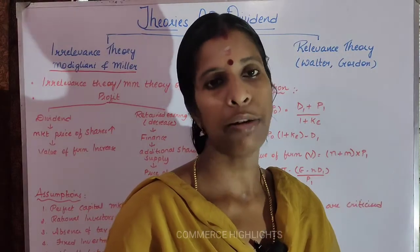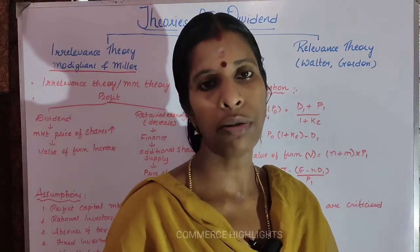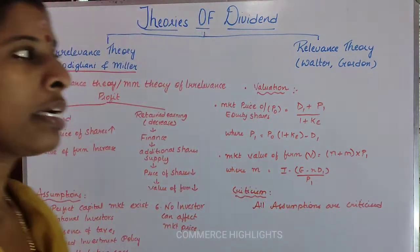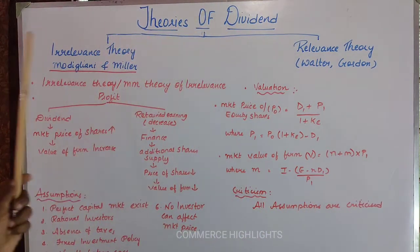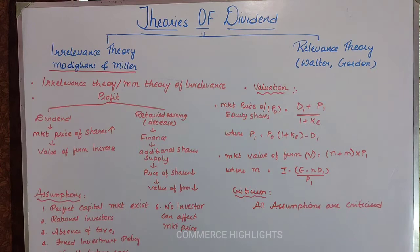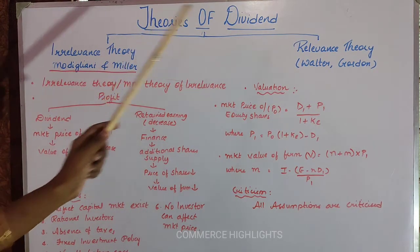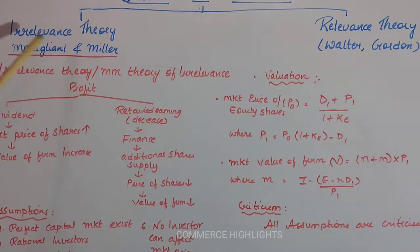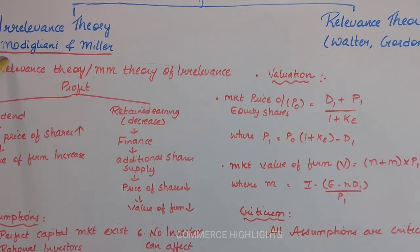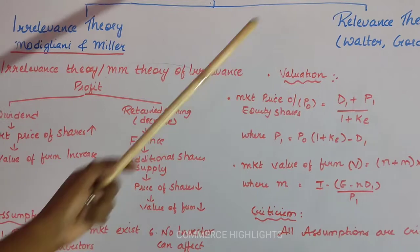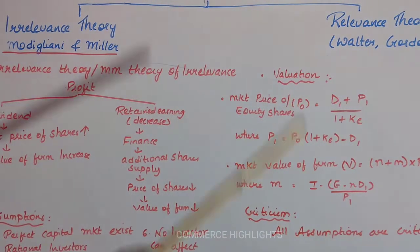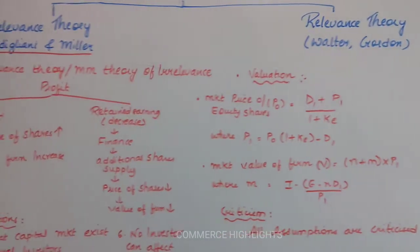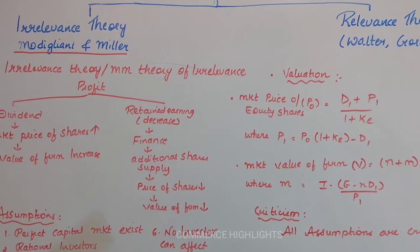Good morning everyone. Today we are going to deal with the topic theories of dividend. We have two theories of dividend: irrelevance theory and relevance theory. Irrelevance theory is propounded by Modigliani and Miller, and relevance theory is propounded by Walter and Gordon. Let us discuss what irrelevance theory is in this video.